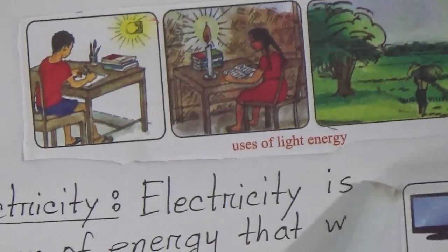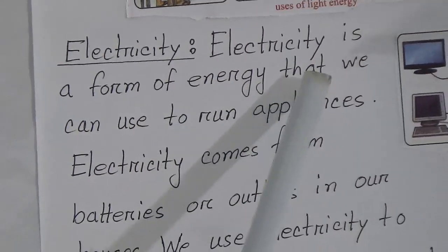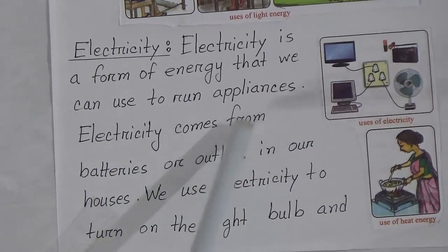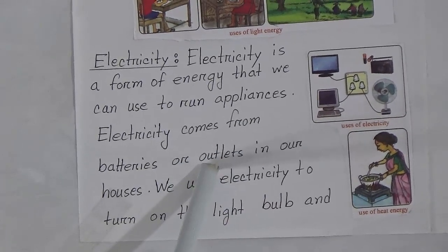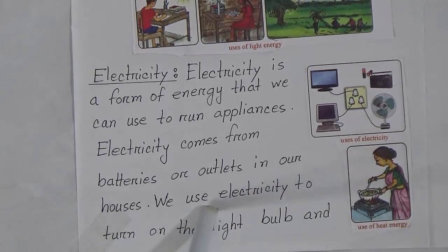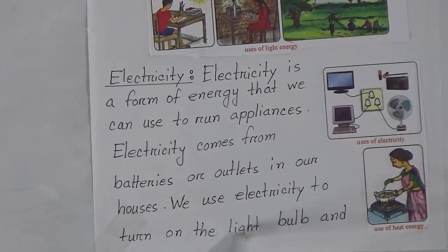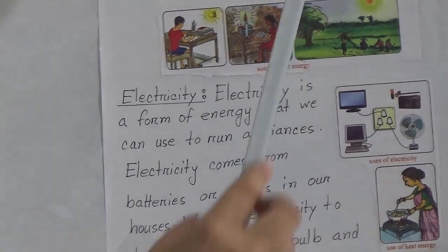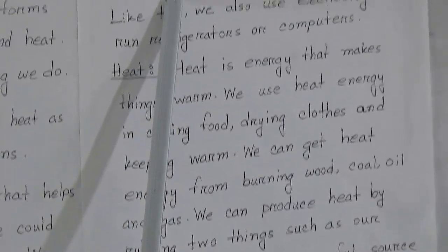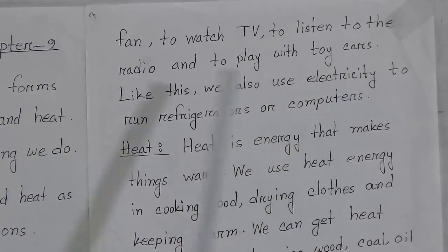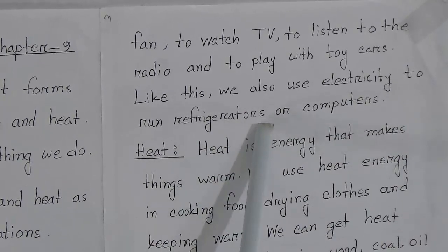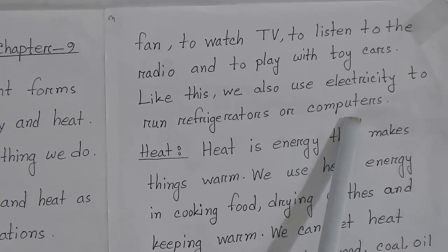Electricity is a form of energy that we can use to run appliances. Electricity comes from batteries or outlets in our houses. We use electricity to turn on light bulbs and fans, to watch TV, to listen to the radio, and to play with toy cars. We also use electricity to run refrigerators and computers.